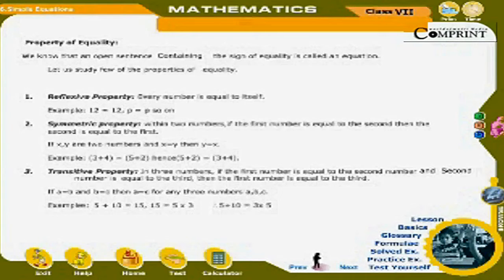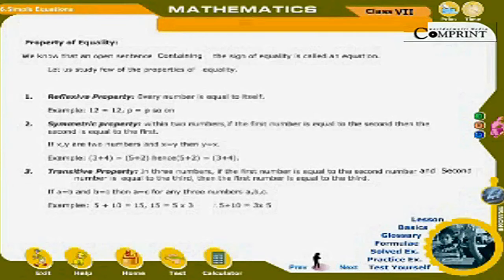2. Symmetric property: Within two numbers, if the first number is equal to the second, then the second is equal to the first. If x and y are two numbers and x = y, then y = x. For example, 3 + 4 = 5 + 2; hence 5 + 2 = 3 + 4.